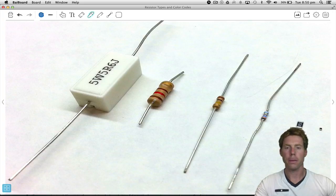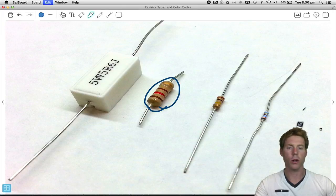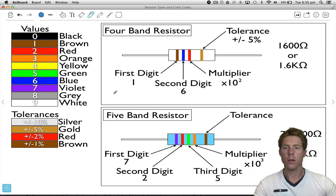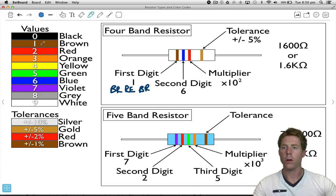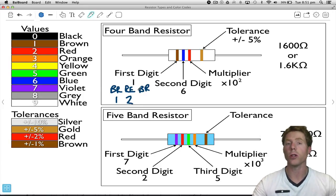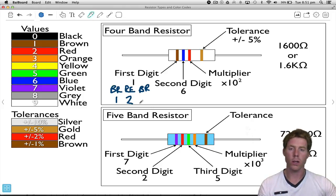Now, what if we use this example here? So this resistor is a brown, red, brown, and then it's got a gold band. So brown, red, brown. Brown is one. Red is two. And the last one, remember, this is how many zeros you need to add. We've got the number one, so we need to add one zero. So it's 120 ohms.